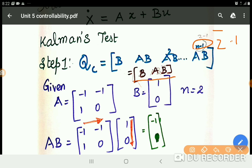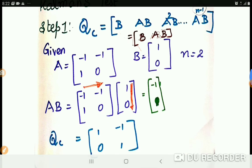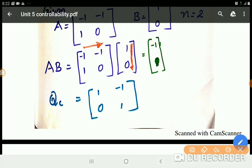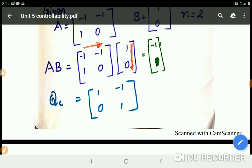As far as the question is concerned, we have written all the given: A, B, and n. Fine. So we need to find AB to frame the Qc equation. B is already in the question; we need to find the multiplication of A and B.